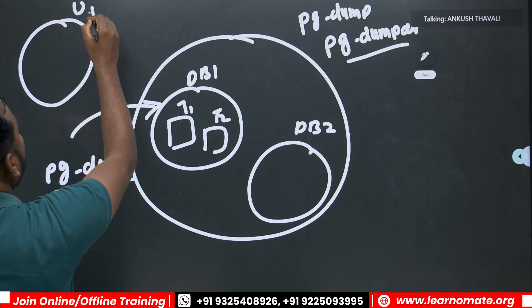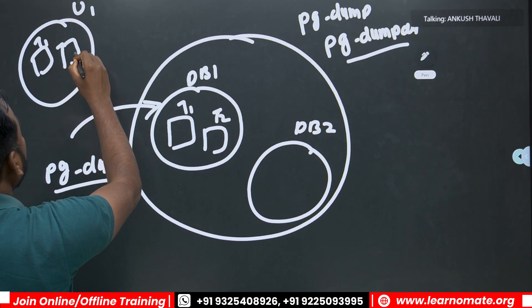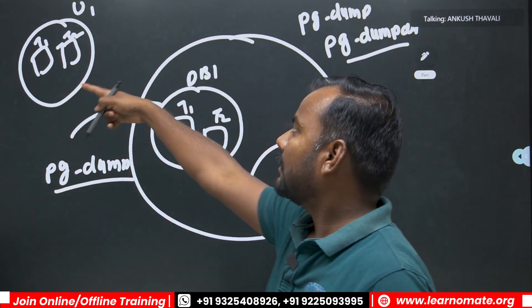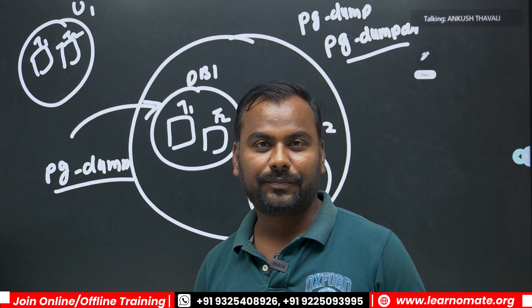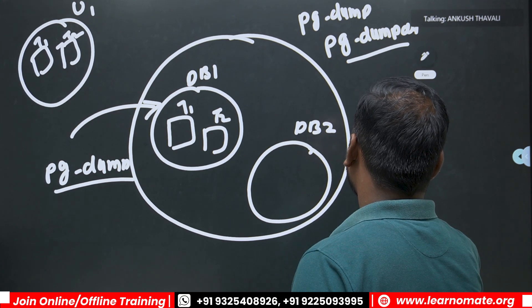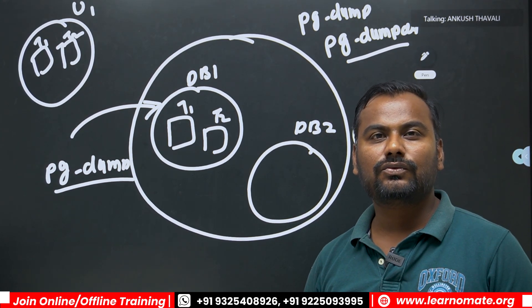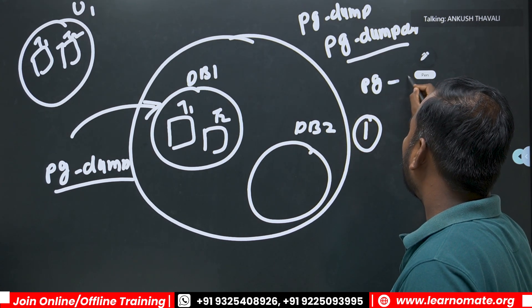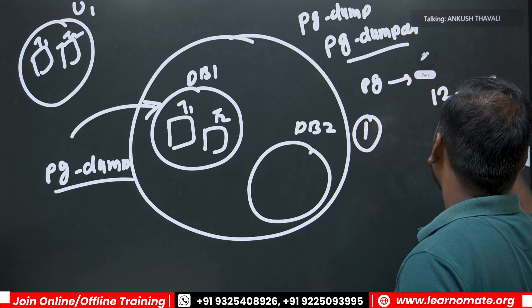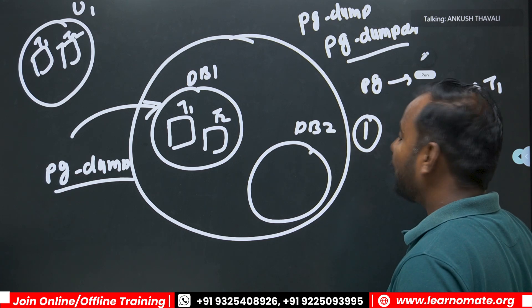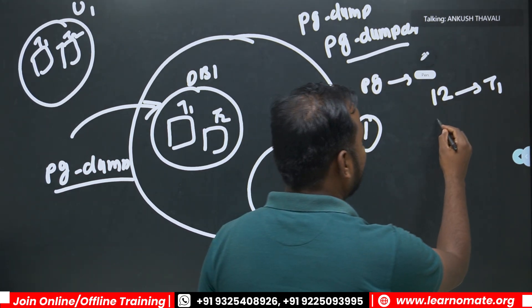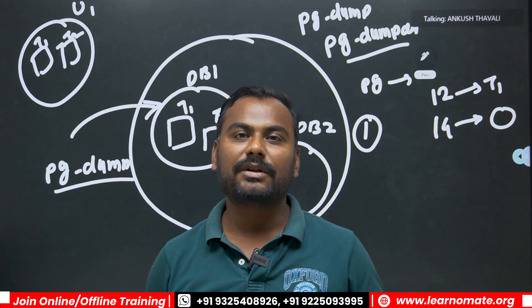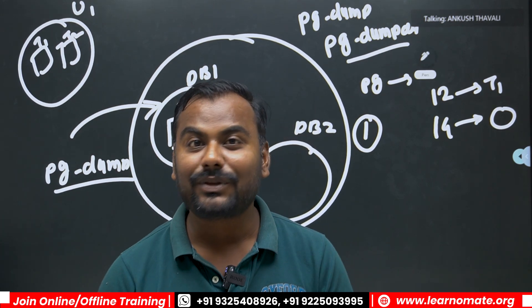Let's say I have one schema named E1, and under that T1 and T2 tables are there. You can take the backup of your complete schema, which will back up all the objects like T1 and T2. Another importance of pg_dump is that you can migrate tables from one version to another — for example, from PostgreSQL version 12, take the T1 table backup and restore it to version 14. Cross-version migration is possible with pg_dump.